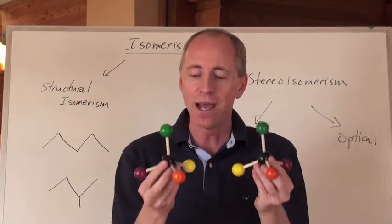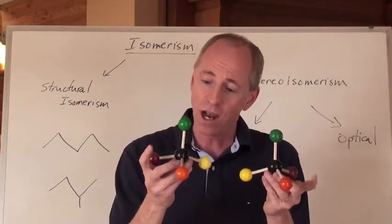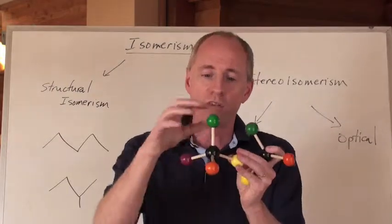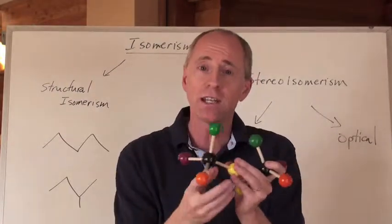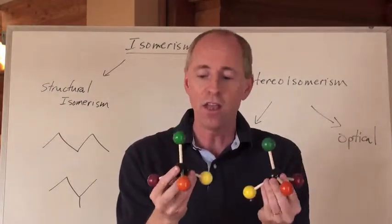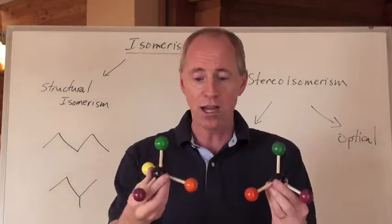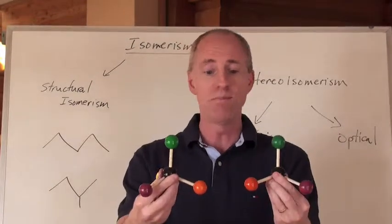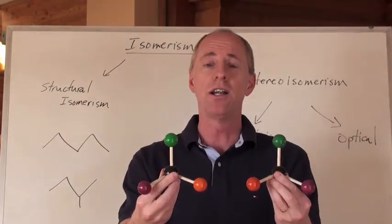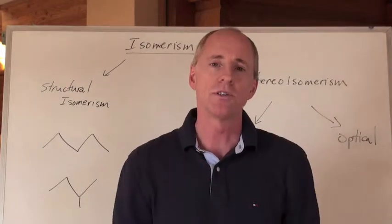So again, the chiral center means a carbon atom bonded to four different groups. If the two arrangements are superimposable, they're the same. But if they are mirror images of each other that cannot be superimposed, then they're optical isomers.